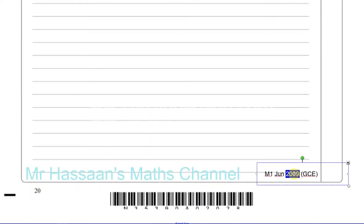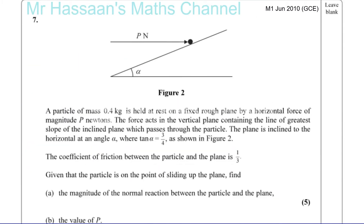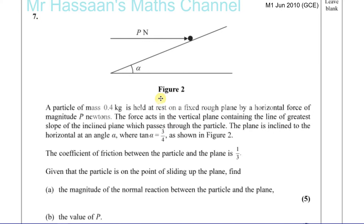Sorry about that — just correcting a cut-and-paste mistake. A particle of mass 0.4 kilograms is held at rest on a fixed rough plane by a horizontal force of P Newtons. The force acts in the vertical plane containing the line of greatest slope. The plane is inclined at angle alpha, where tan alpha equals three quarters. The coefficient of friction is one third, and the particle is on the point of sliding up the plane. Find the magnitude of the normal reaction.